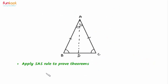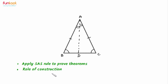Let's summarize what we have learned from this proof. We have learned to apply the SAS rule to prove theorems. We learned the role of construction in proofs — here we drew an angle bisector so that we can apply the SAS rule of congruency.